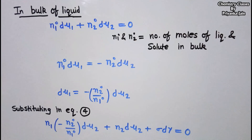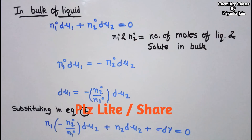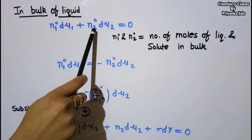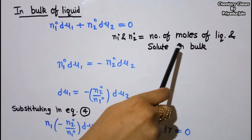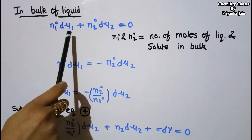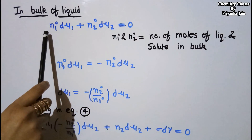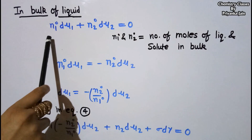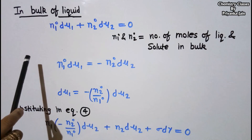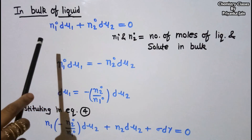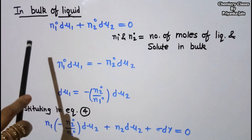So far we have studied the process on the surface of the solution. Now we consider the bulk of the liquid. In the bulk, we denote the moles as n₁⁰ and n₂⁰ for the liquid and solute respectively. In the bulk, we do not use surface tension terms, so the equation becomes: n₁⁰dμ₁ + n₂⁰dμ₂ = 0. At equilibrium, the chemical potential of any component is the same in both phases — bulk and surface.